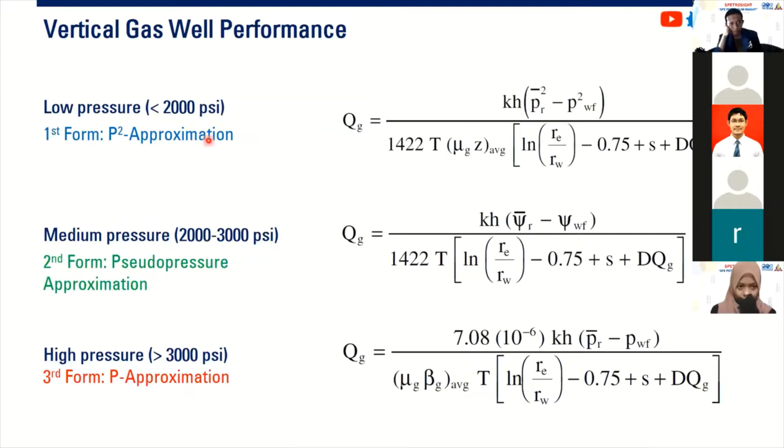So below 2000 PSI, the approximation is called P squared approximation. This is the form. Or maybe you ask what is DQ. It's actually non-Darcy flow. It is additional skin due to turbulence, but we will not discuss it in this presentation. So you can take it or maybe you can just neglect this, the DQ, if you assume laminar flow. But most of the time you cannot do that assumption. We need to calculate this DQ, but you can study or you can learn about it later.